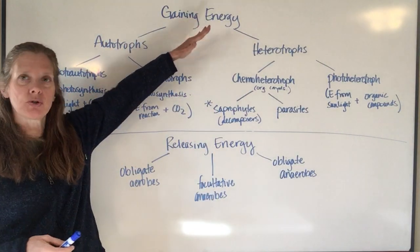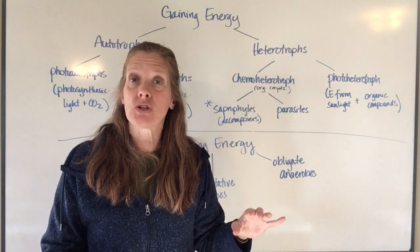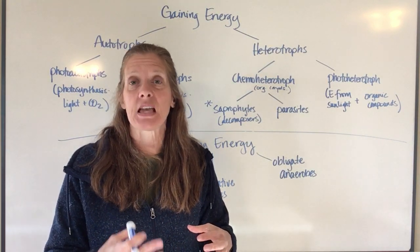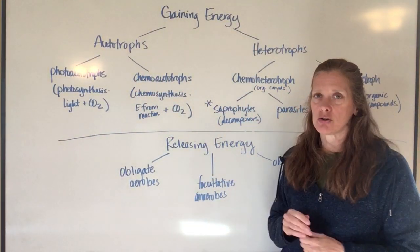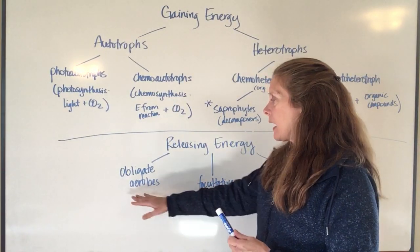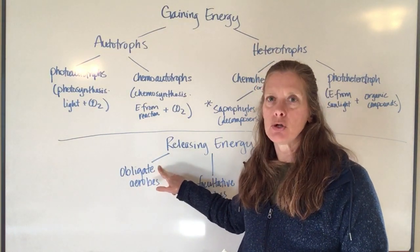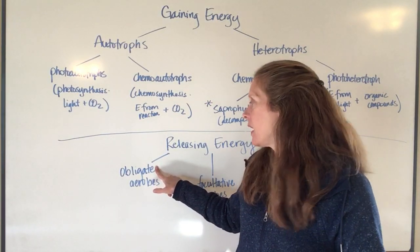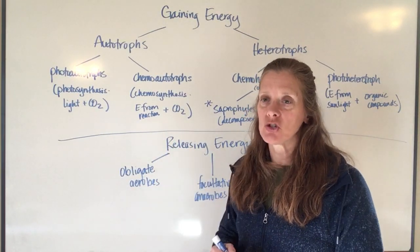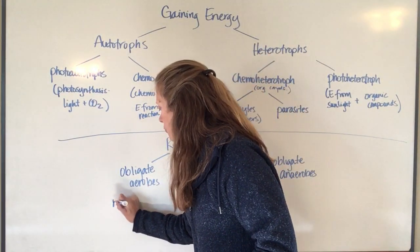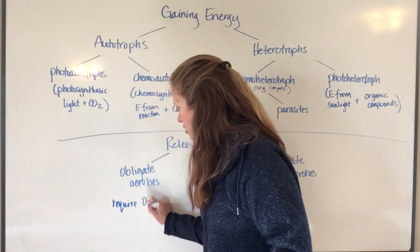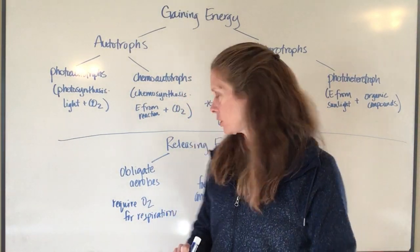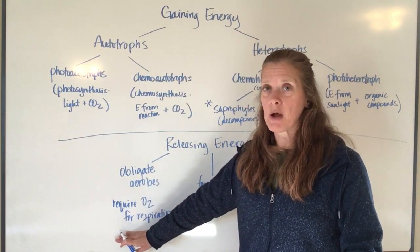That is how bacteria gain energy. They then have to take that energy — through cellular respiration or fermentation — and convert it into a form they can use. When releasing energy, there are basically two ways to do it. You can have what's called an obligate aerobe — 'obligate' just means you have to have something. We are obligated to have oxygen because without it we die. Bacteria that are obligate aerobes require O2 for cellular respiration, doing exactly what we studied.